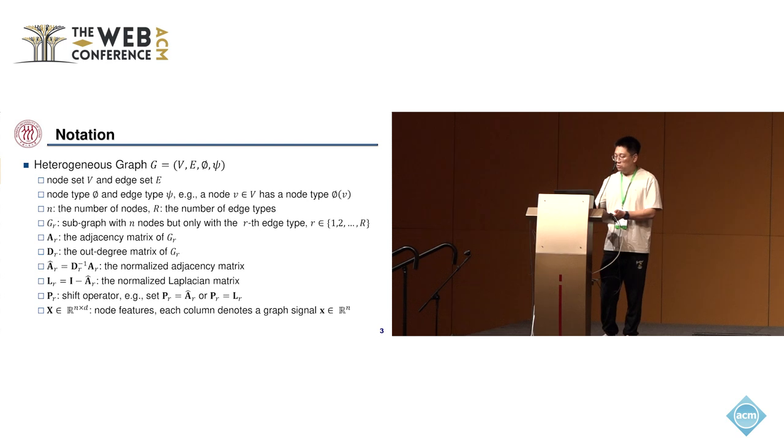First, I would like to introduce some of the notations. We use G to denote a heterogeneous graph. It has a node set V and an edge set E. For each node, it has a node type phi, and each edge has an edge type psi.